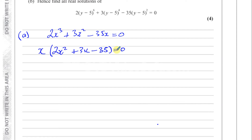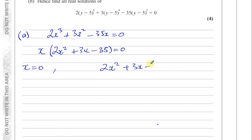We can say one of the solutions is x equals 0, and the other solutions will be found by solving 2x squared plus 3x minus 35 equals 0.